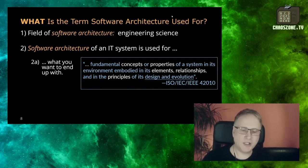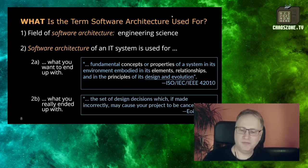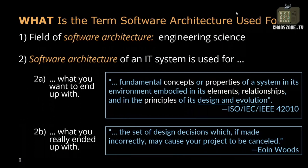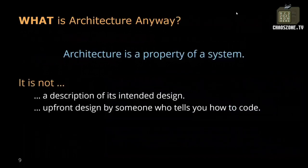The other meaning of software architecture is the set of design decisions which, if made incorrectly, may cause your project to be canceled. At the end of the day, software architecture is just a property of your IT system — your system just has an architecture. It's not a description of its intended design, and it should not be treated as some upfront design dictated by an enterprise architect telling you how to write code. It's just the property of a system.